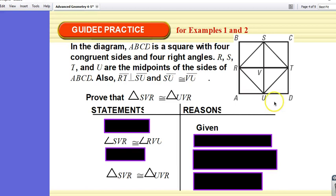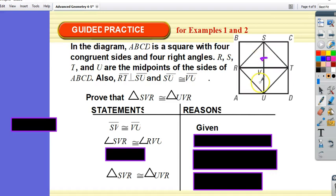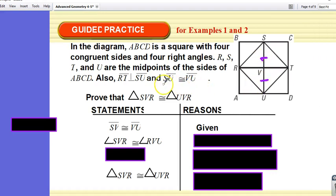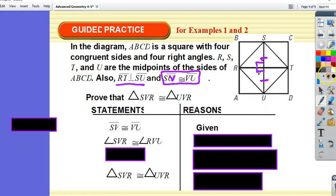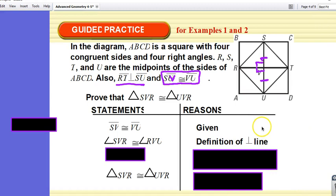So, what did they give us so far? They gave us that SV is congruent to VU. That was given. What else did they give us? They gave us this. We're going to have to write that somewhere. SVR, this angle right here is congruent to RVU. Well, didn't they tell us that these were all right angles?